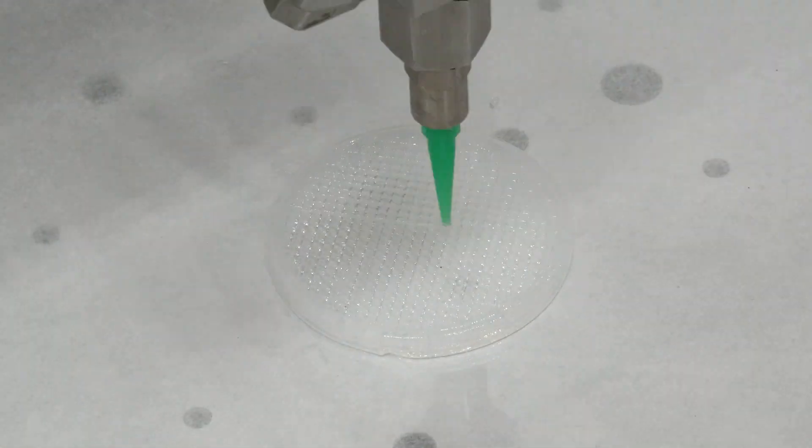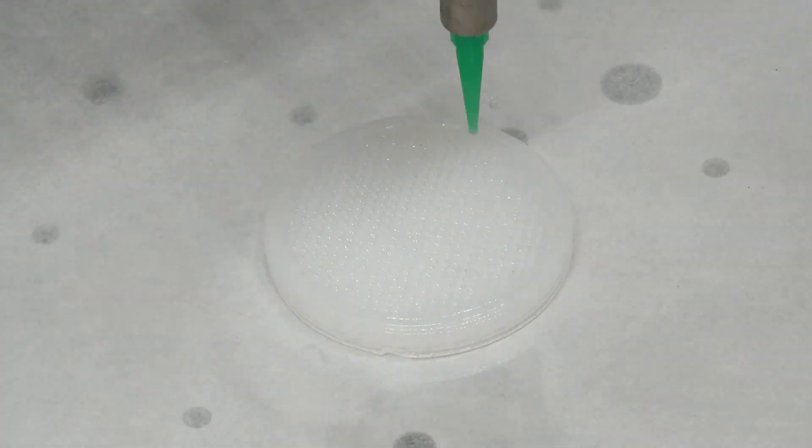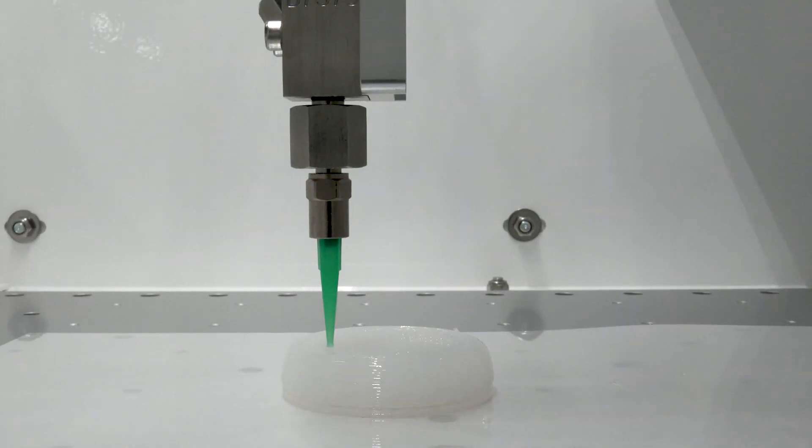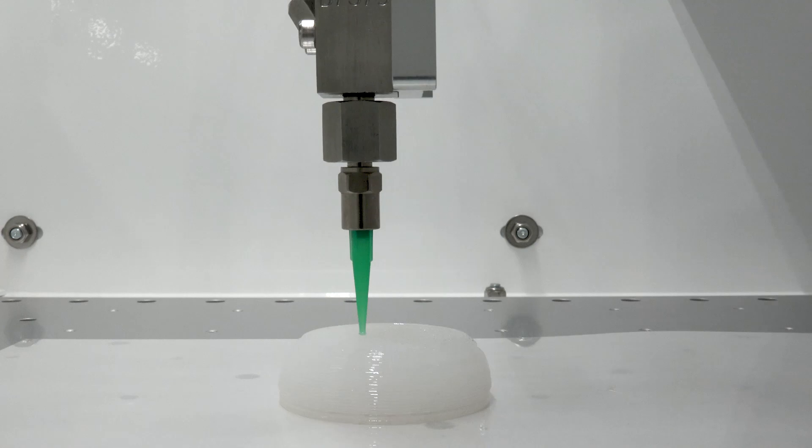The Sigma Benchtop Dispenser, configured with a simple RTV silicone valve, can create custom gaskets, fixtures, masking boots, or virtually anything else you can model to enhance your application.